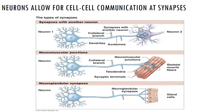Neurons can synapse with other neurons for cell-to-cell communication. You can have a synapse with another neuron, a synapse at a neuromuscular junction, or a neuroglandular synapse. All of these allow for cell-to-cell communication between neurons with a neuron, a muscle, or a gland.